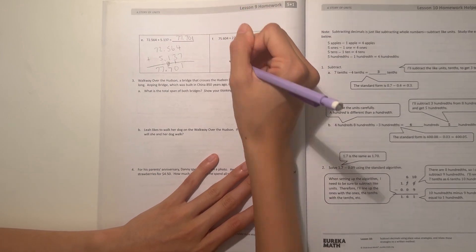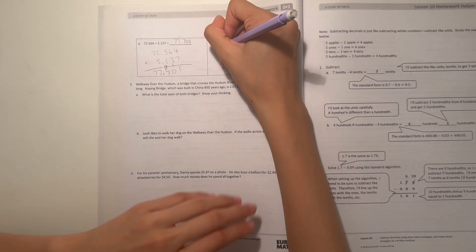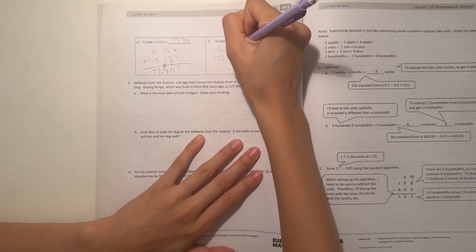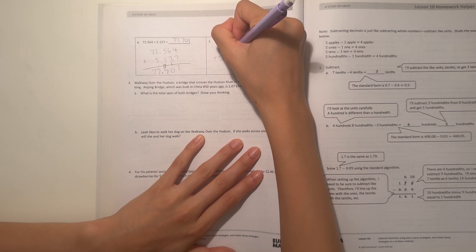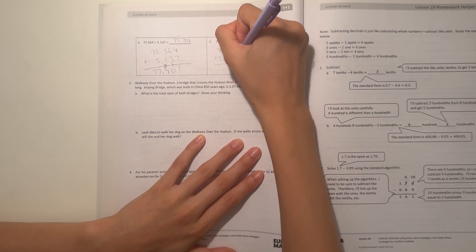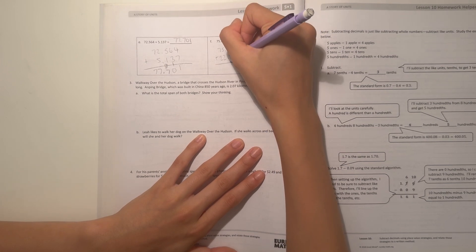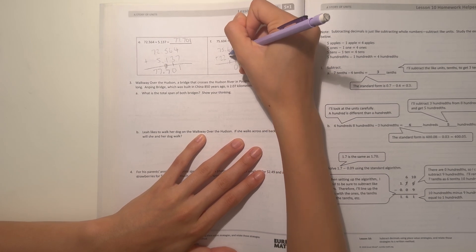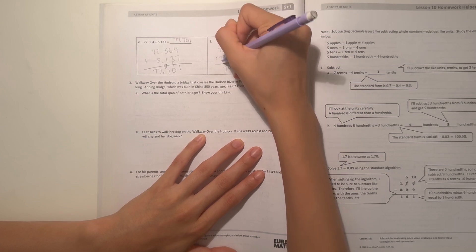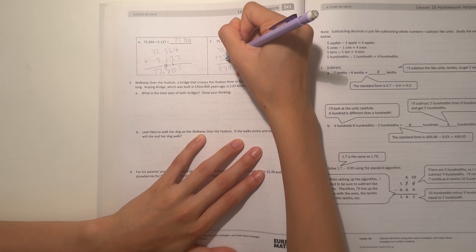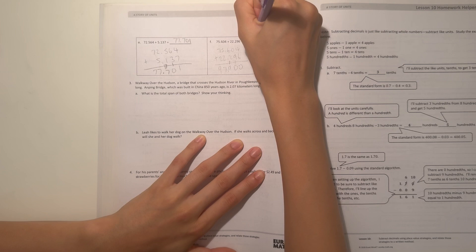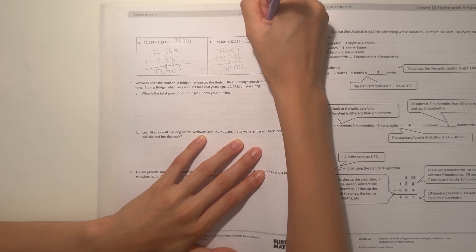Alright, and F, we have 75.604 plus 22.296. 4 plus 6 is 10. 9 plus 0 is 9 plus 1 is 10. 6 plus 2 is 8 plus 1 is 9. 5 plus 2 is 7. And 7 plus 2 is 9. Move the decimal point down. So our answer is 97.9.